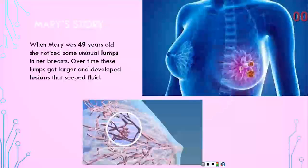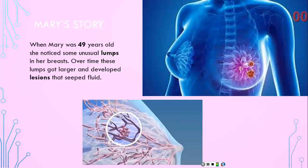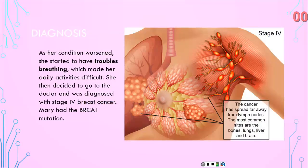When Mary was 49 years old she noticed some unusual lumps in her breasts. Over time these lumps got larger and developed painful lesions that seeped fluid. As her condition worsened she began having troubles breathing and because of this she was unable to do some of her daily activities like working and going on walks. After her condition got out of hand she decided to go to the doctor and was diagnosed with stage 4 breast cancer.